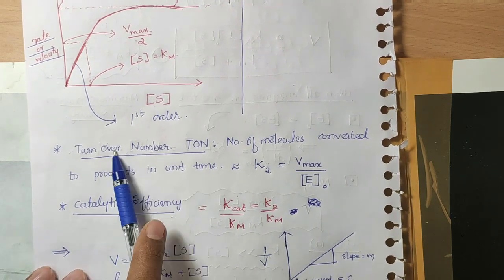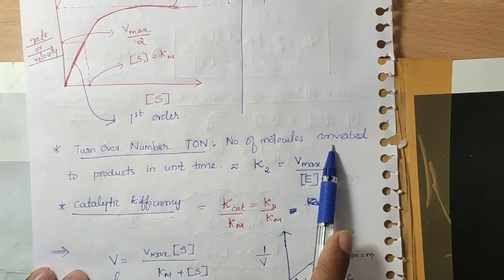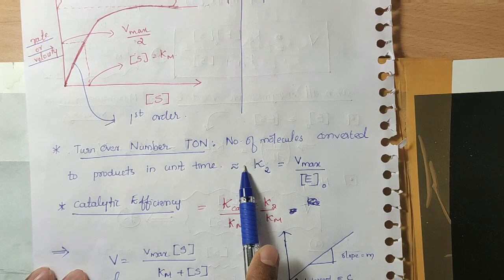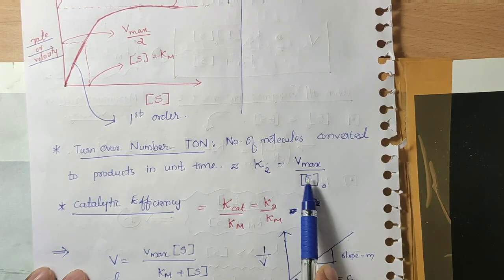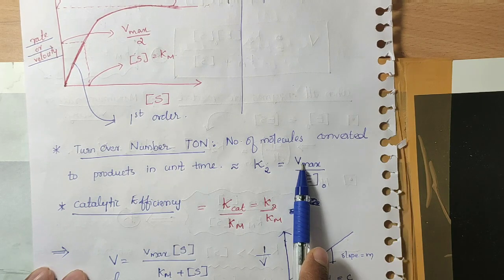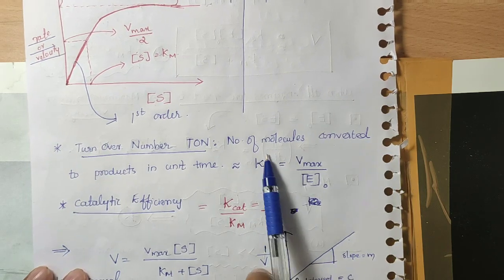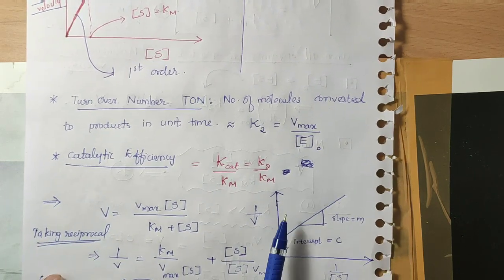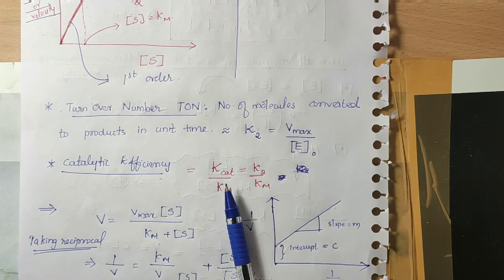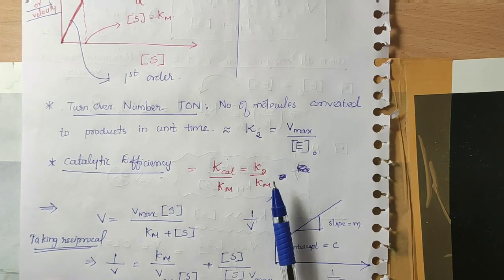Two more important terms: the turnover number is the number of substrate molecules converted to products per unit time per enzyme molecule — numerically equal to K2 = Vmax/E0. Catalytic efficiency is kcat/Km, where kcat equals K2.